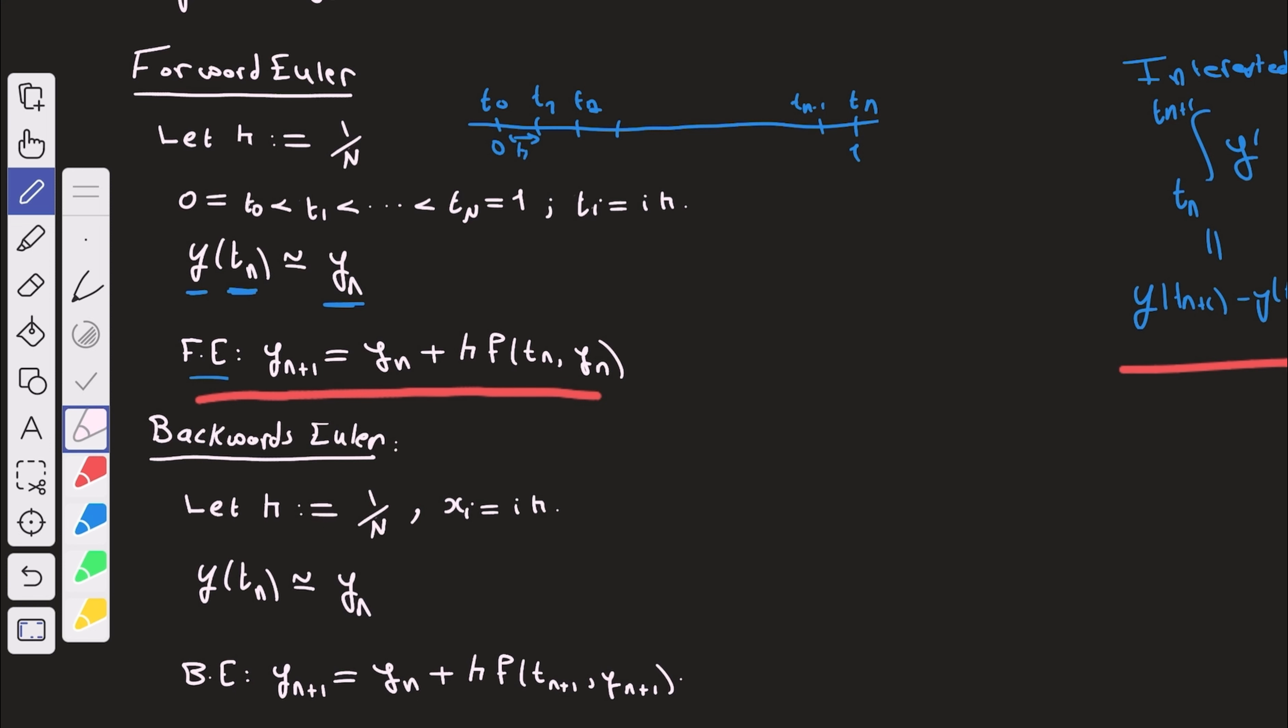However, the order of the convergence is order of h. And what does that mean? If you keep refining your partition, if you keep adding more points and points, you will actually converge to the solution. But this convergence to the solution is not so fast. It's a slow convergence.